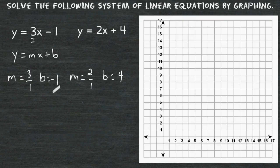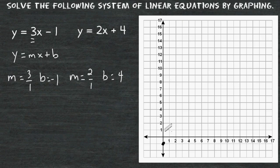Let's graph our first equation. We start by making a point at the y-intercept. For the first equation, negative 1 is where the line crosses the y-axis, so we make a point at negative 1. Once we make a point at our y-intercept, we use the rise over the run to make a series of points that we can connect with a straight line. For this equation, the slope is 3 over 1.